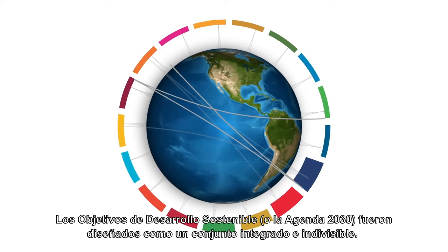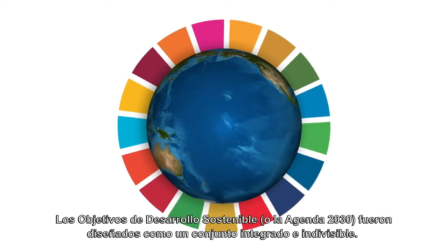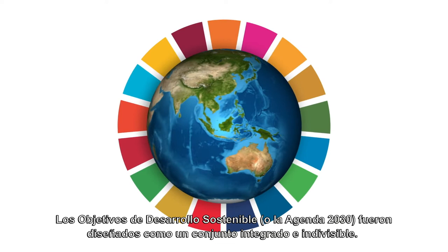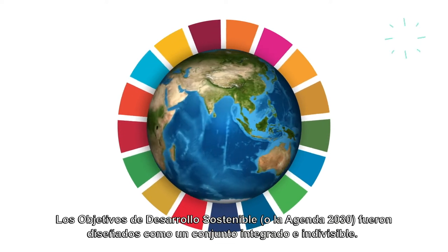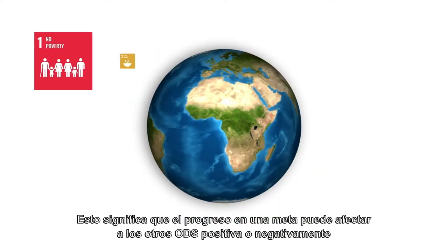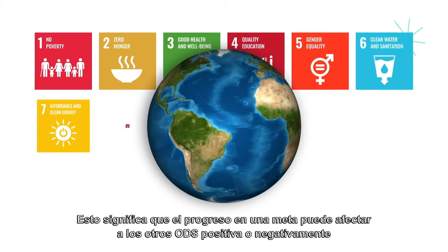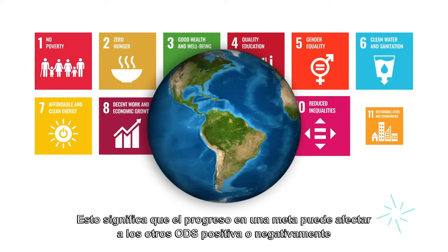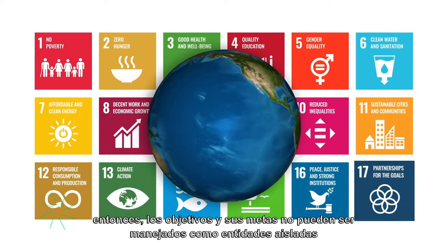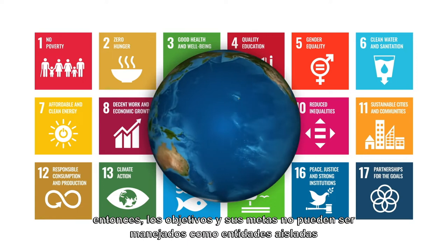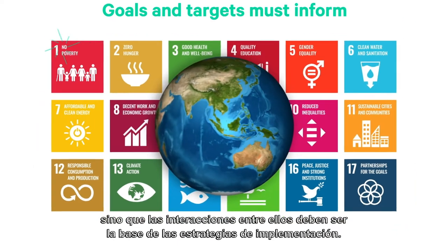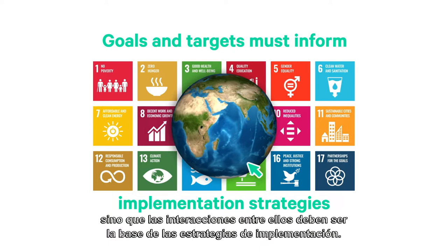The 2030 Agenda and the Sustainable Development Goals is designed as an integrated and indivisible framework. Since progress on one target can affect other SDGs positively or negatively, the goals and targets cannot be treated as isolated entities, but their interactions must inform implementation strategies.